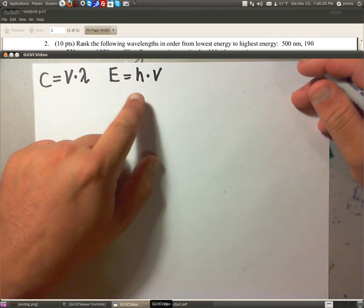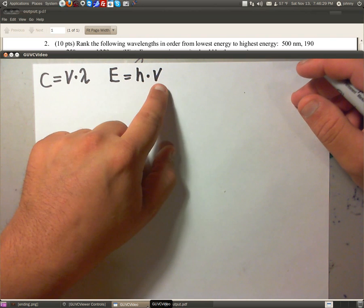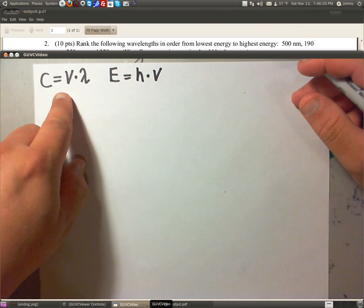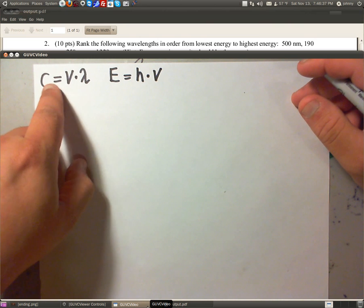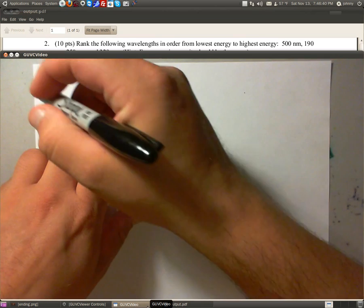If you notice, this is the one that we really need, but notice that wavelength is not involved. So what we'll have to do is take this problem and solve it for V, plug it in so we can have wavelength in this equation.